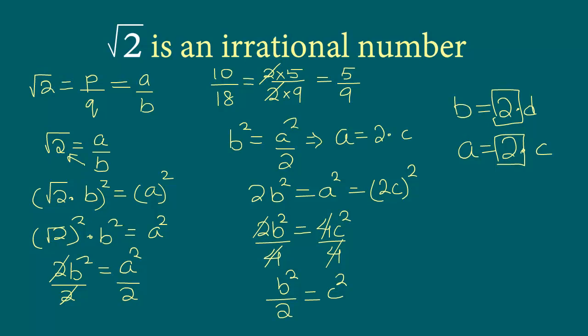That means our initial assumption is wrong. And what is our initial assumption? That let us assume square root 2 is a rational number. That assumption itself is wrong. And hence we say that square root 2 is indeed an irrational number.